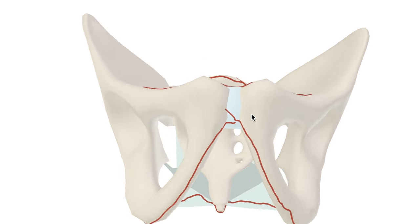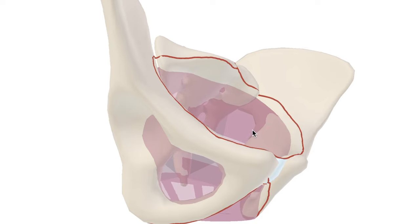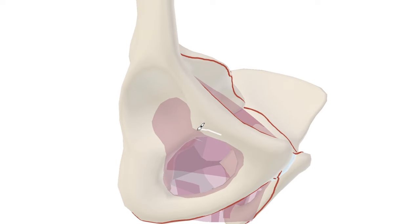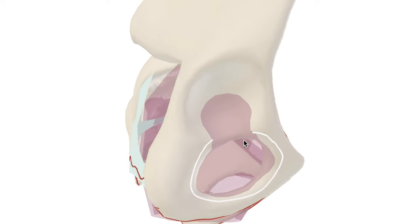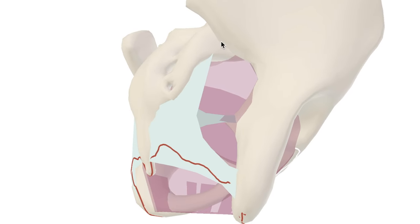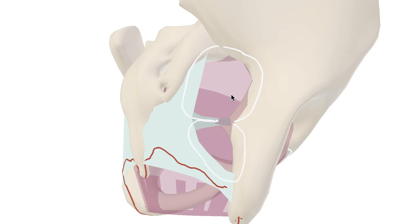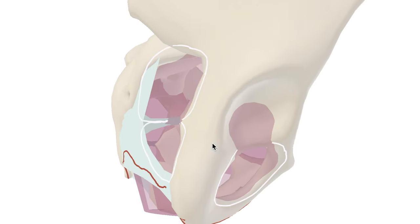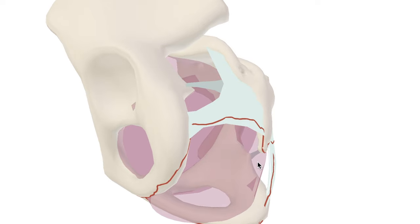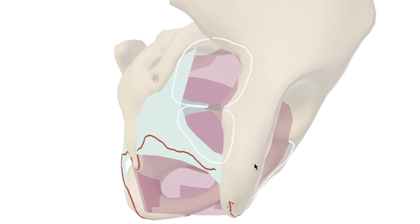Before we wrap up, a brief mention should go to the other prominent foraminae in the pelvis. This is the obturator foramen here. And then the two foraminae bordered by the ligaments: the greater sciatic foramen and the lesser sciatic foramen, named after the greater and lesser sciatic notches which they relate to.